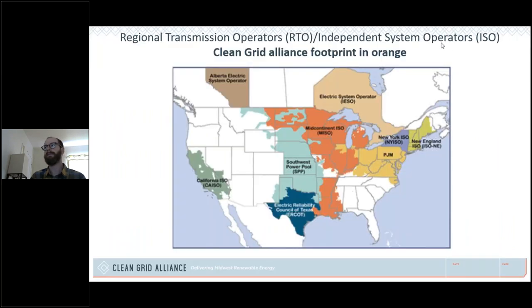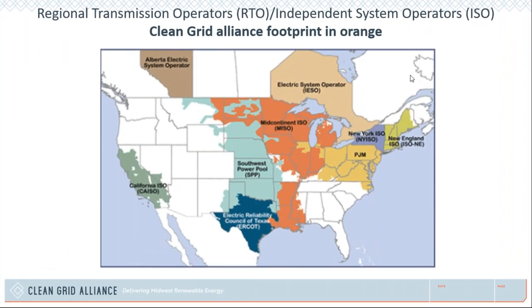Thank you very much, Joe. We'll turn it over now to Beth Solholt with the Clean Grid Alliance. Beth's camera is apparently not working, so we'll be able to see her slides and hear her. The footprint we work in is the Midcontinent Independent System Operator — MISO goes from Manitoba, Canada all the way down to a portion of Texas, and then Louisiana, Mississippi, and Arkansas into MISO South. A pretty big footprint in a good swath of wind and sun.